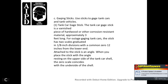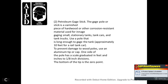14. Gauging sticks. Gauging sticks are used to gauge tanks, tanker cars, and tank vehicles. The tanker car gauge stick is varnished from a piece of wood or other corrosion-resistant material, approximately three feet long, used for outage gauging of tank cars. The stick has two scales graduated in one-eighth-of-an-inch divisions with a common zero twelve inches from the lower end. An angle is attached to the stick; when placed with the angle resting on the outside of the tanker car shell, the zero scale coincides with the underside of the shell.